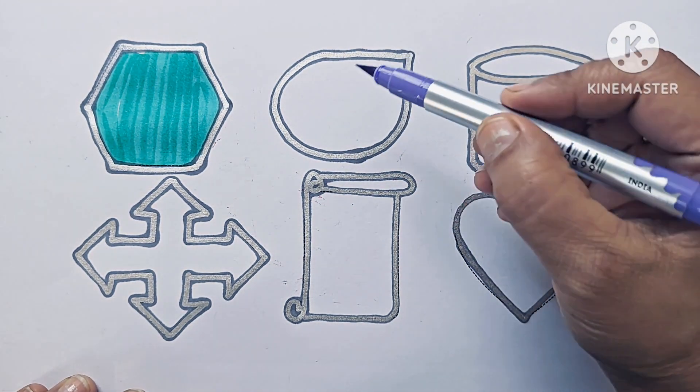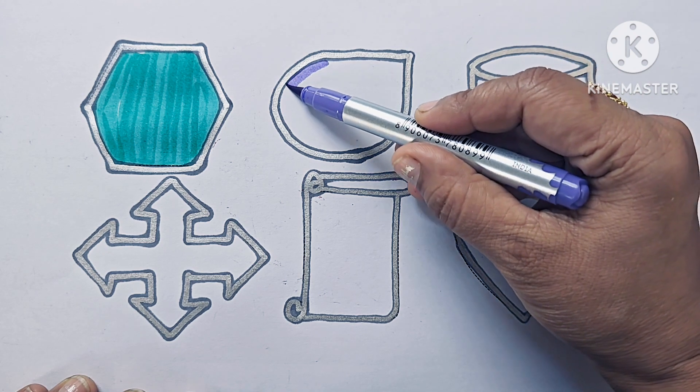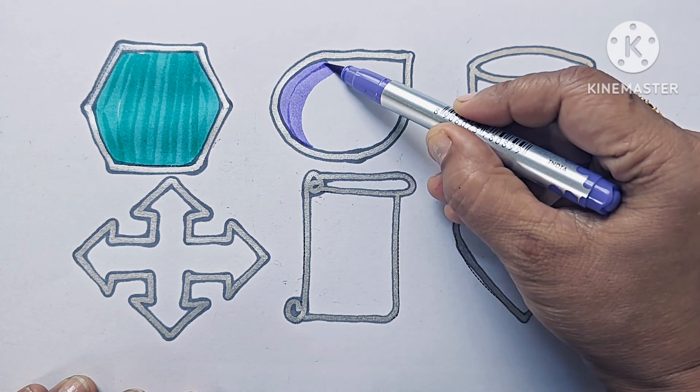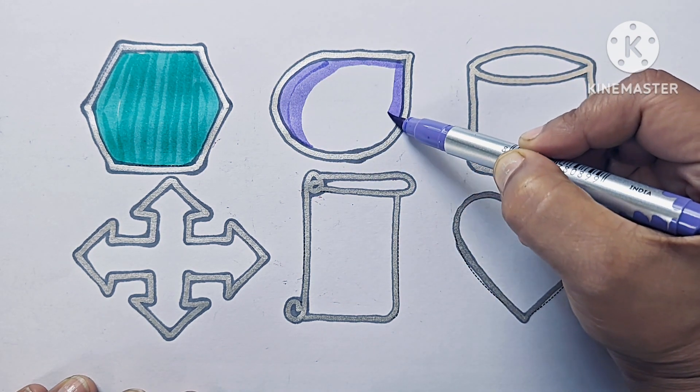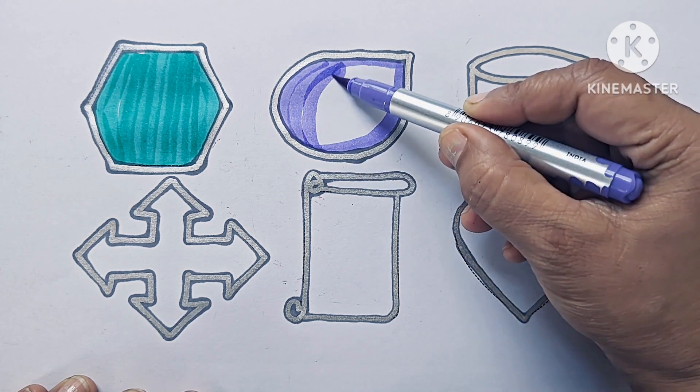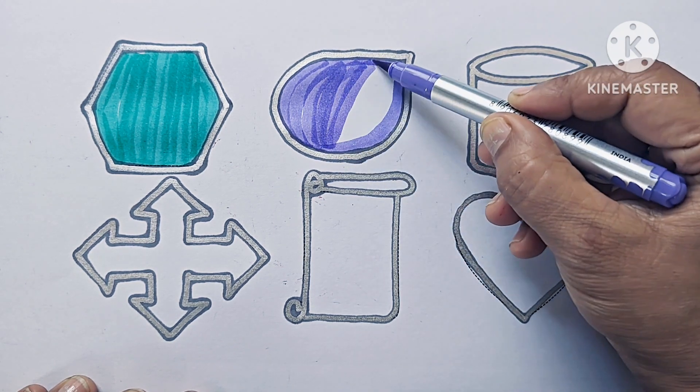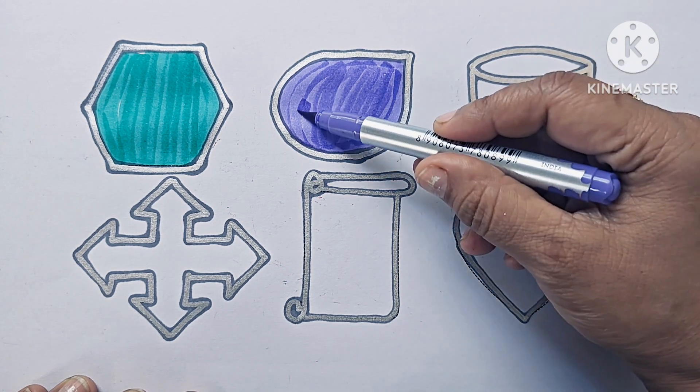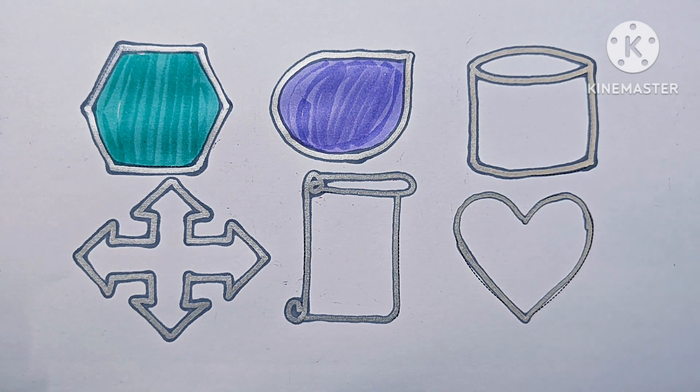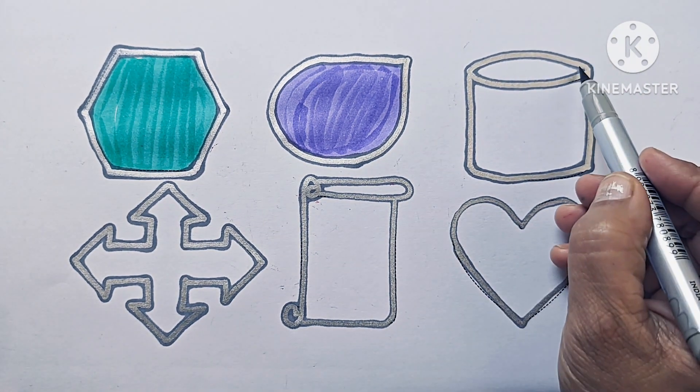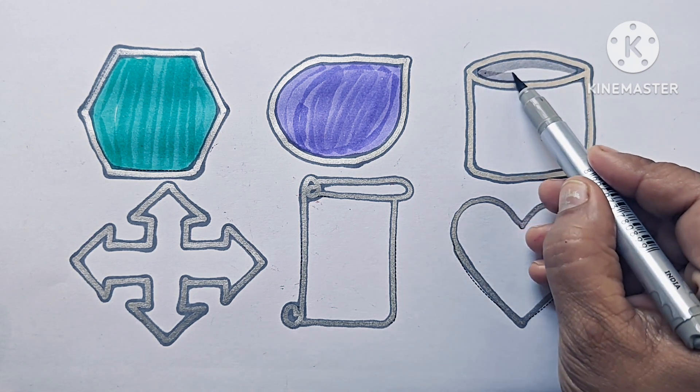Hexagon, this is Teardrop, looks like water droplet. The color is Purple. This is Cylinder, and the color is Gray.